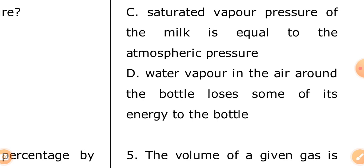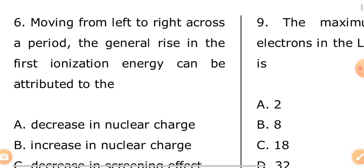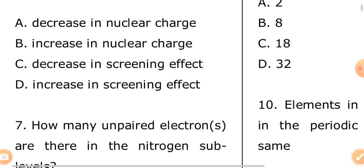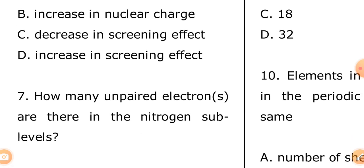We are skipping calculation questions in this particular video. Question six: moving from left to right across a period in the periodic table, the general rise in the first ionization energy can be attributed to — A: decrease in nuclear charge, B: increase in nuclear charge, C: decrease in screening effect, D: increase in screening effect. The answer is B — increase in nuclear charge. Read up everything about the periodic table in your chemistry textbook.